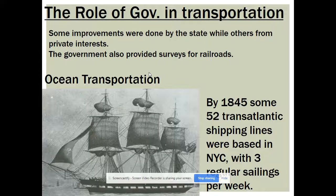The government provided surveys for railroads but didn't fund railroad construction until after the Civil War. Steamships developed for ocean travel after the steamboat, but they were slow. Clipper ships — tall, skinny sailing vessels — could cut through water very quickly. You might think clipper ships would outperform steamships because of speed, but steamships became the vessel of choice because they were wider, could hold more cargo, and could ship more goods, even though they were slower.